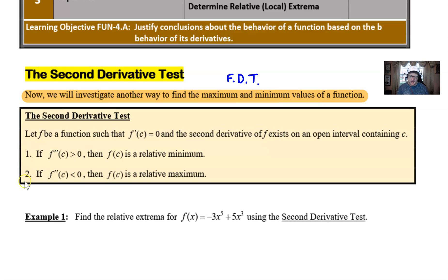We have a two-part process here with this Second Derivative Test. Number one, if the second derivative evaluated at that c that gave us the first derivative equal to zero is greater than zero, positive, then f(c) is going to be the relative minimum.